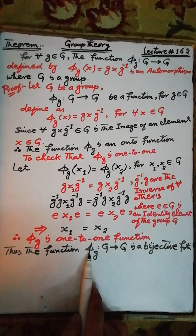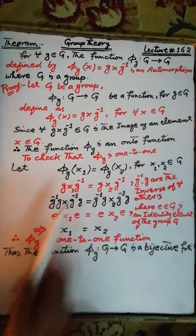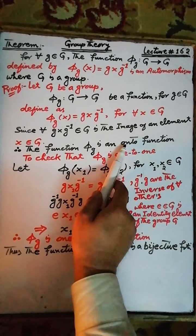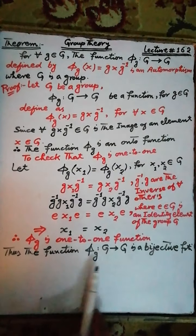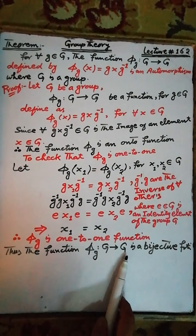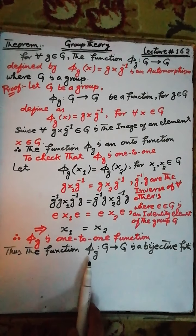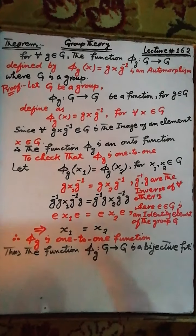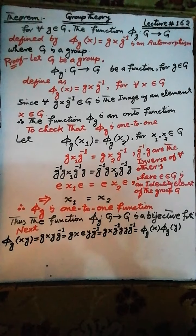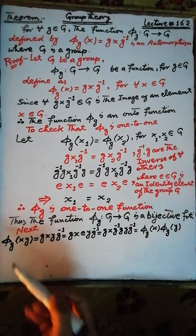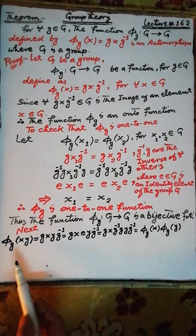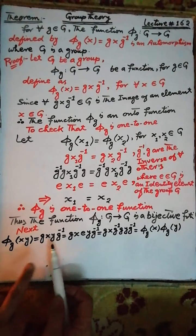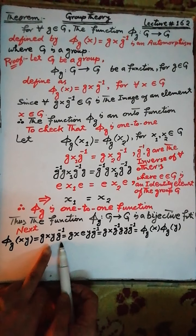Thus the function π(g) is one-to-one as well as onto from the group G to the group G, and therefore is a bijective function. Next, π(g)(xy) = g(xy)g⁻¹ as defined above.